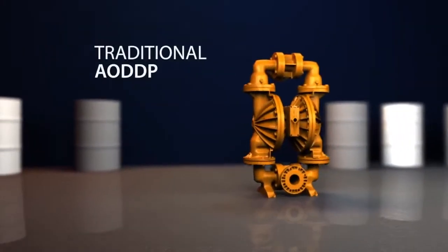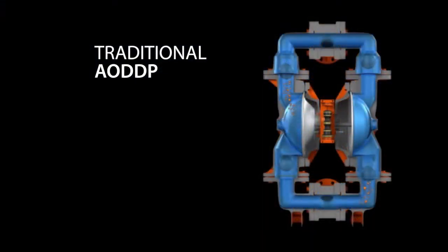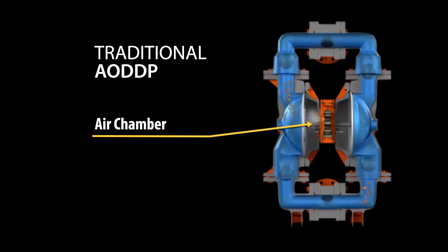For traditional air operated double diaphragm pumps, the air distribution system functions by filling the air chamber or diaphragm cavity with as much air as available, essentially overfilling the air chamber until the end of the stroke, thus displacing fluid on the wetted side of the diaphragm.